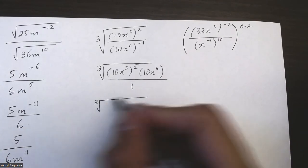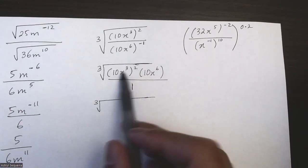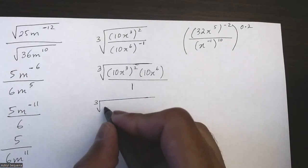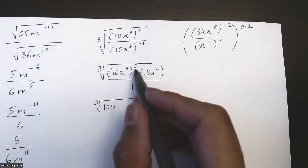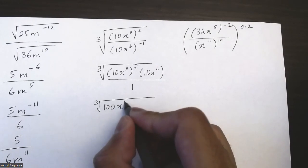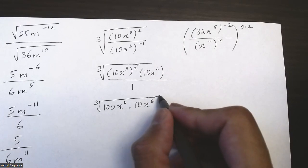So for the next step, I'm going to distribute this exponent into this bracket. So 10 squared is 100, and x cubed squared—so 3 times 2 is just 6—plus x to the 6 times 10x to the 6.